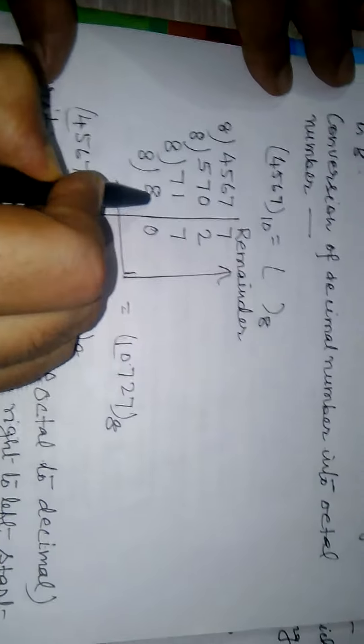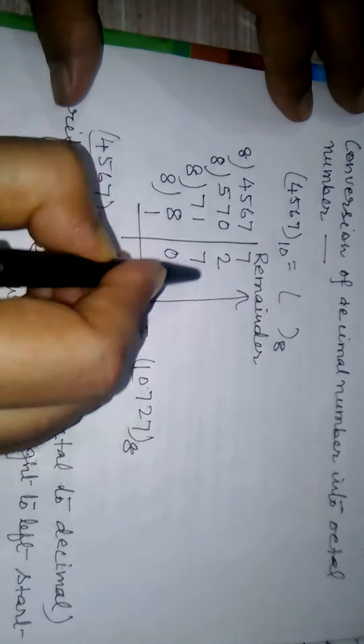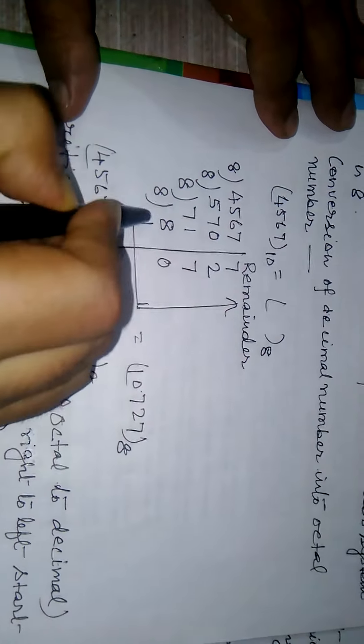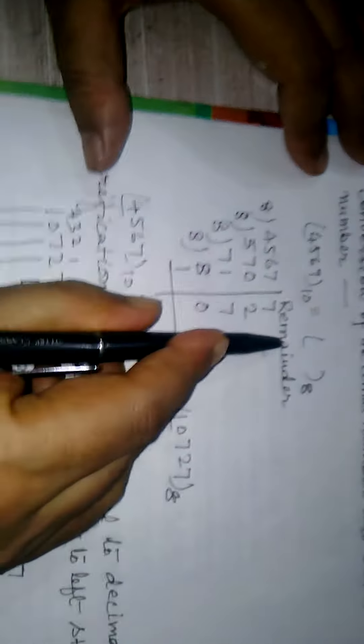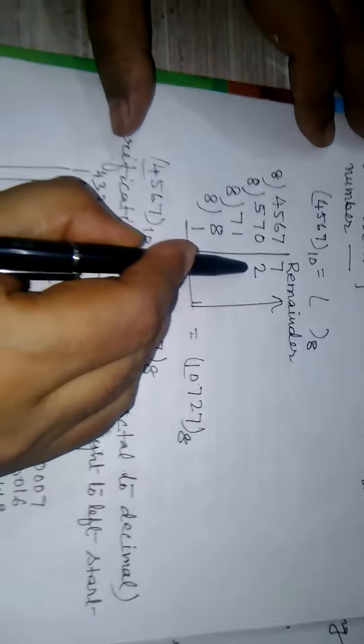Again divide by 8, we get quotient 8 and remainder 7. And again divide by 8, we get quotient 1 and remainder 0. And we write from bottom to top 10727.